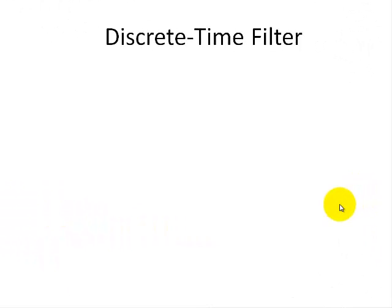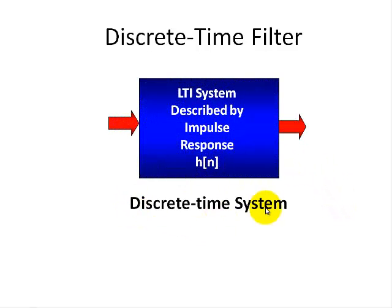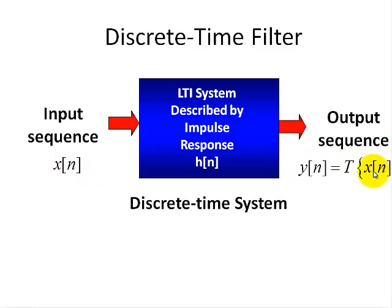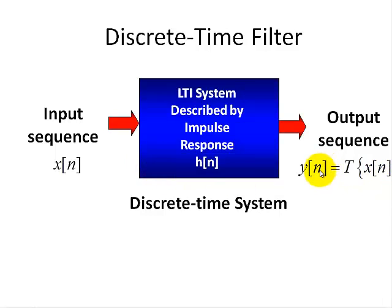Let me give you a visual of a discrete time filter. Here we have a discrete time system or filter — LTI stands for linear time invariance, which I'll discuss in future videos. The discrete time filter is described by its impulse response, A sub n. The impulse response, due to an impulse input, completely describes this filter. We have an input sequence X sub n and an output sequence Y sub n. Y sub n is related to the input sequence through some operation T. The filter takes some input, manipulates it to give a desired output — removing noise, for example.